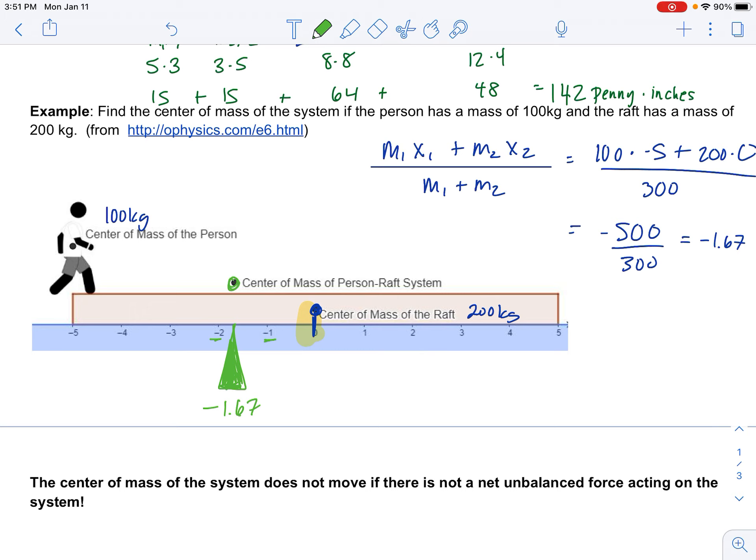Negative 1.67 on this number line. And indeed, that's where the dot is. Now, mathematically, that seems hopefully pretty concrete to you. The center of mass is closer to the center of mass of the heavier object, the raft.